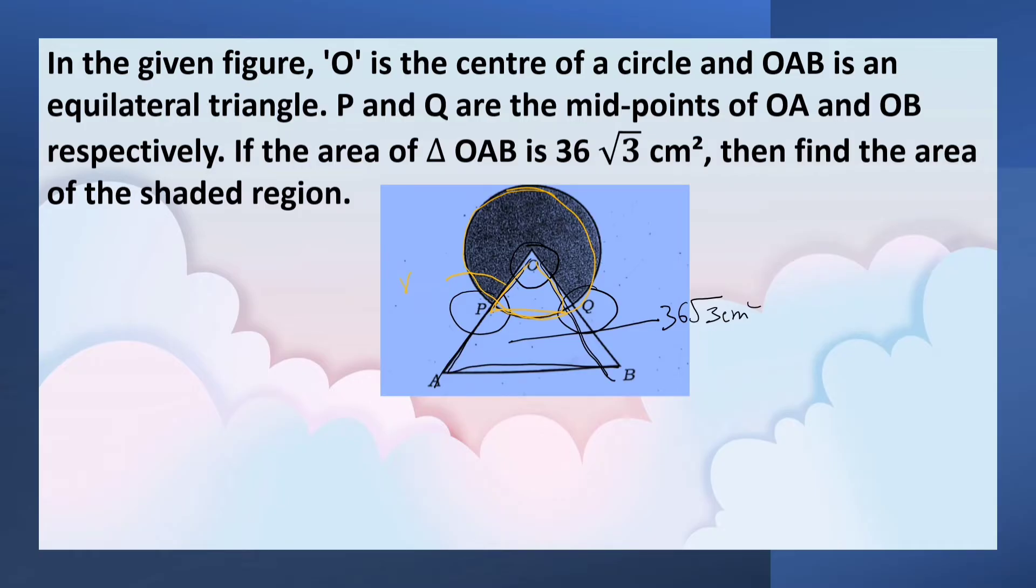We can find the radius of the sector and circle by using the area of the equilateral triangle. Now, let us solve it.